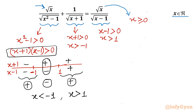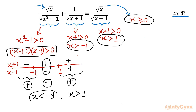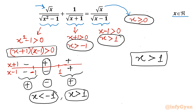Now we take the intersection of all conditions: x ≥ 0, x > 1, x > -1, x < -1, and x > 1. The intersection comes out to x must be greater than 1. So the conclusion is: once x is greater than 1, our solution will be real.